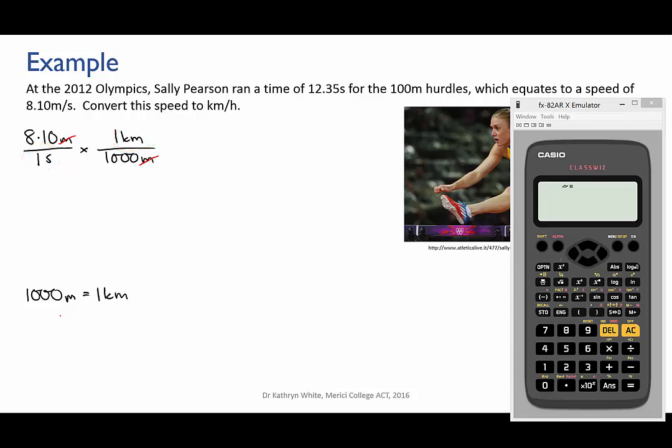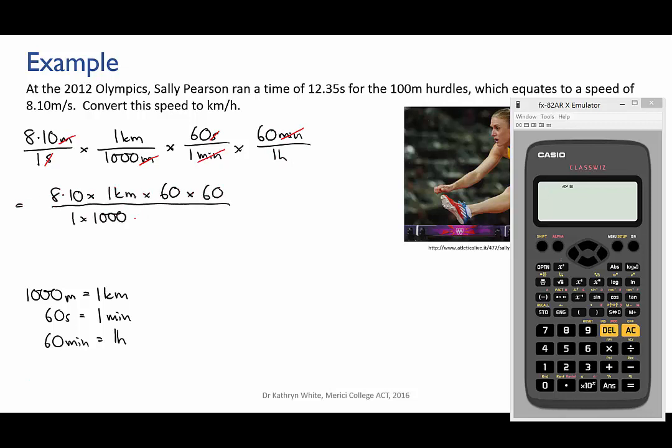So let's now convert the seconds to hours. Let's go to minutes first. Now note that the units don't have to be directly next to each other for you to be able to cancel them. They're just part of the numerator or denominator of one big fraction. And now we'll convert the minutes to hours. And there we are, just a fraction under 30 kilometers an hour.